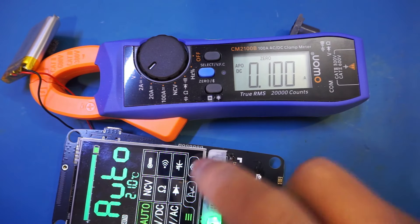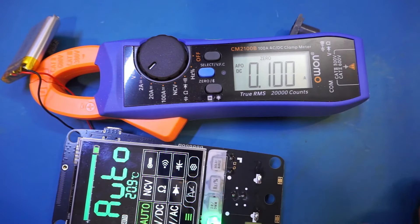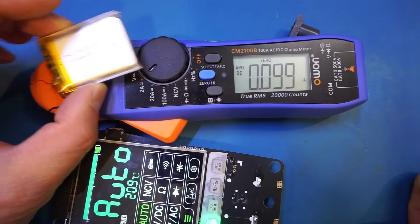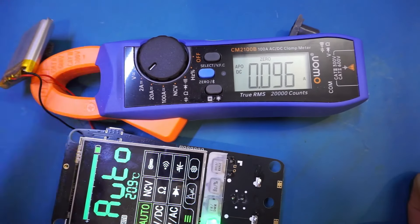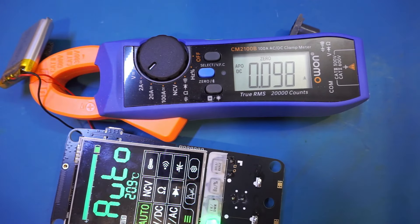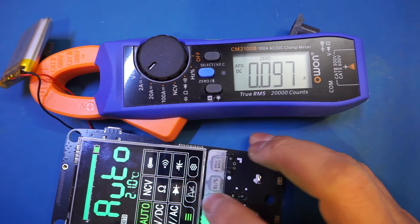Now let's briefly take a look at the current consumption. Currently, we're in the multimeter mode. You can see we're drawing 100 milliamps. Given that the battery itself is a 1Ah battery, you can expect roughly 10 hours runtime in multimeter mode.